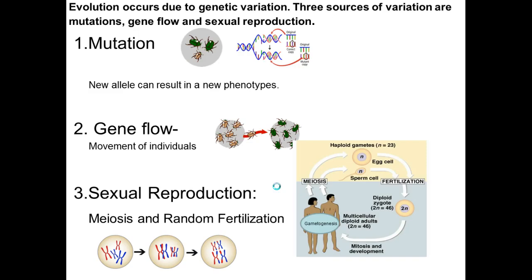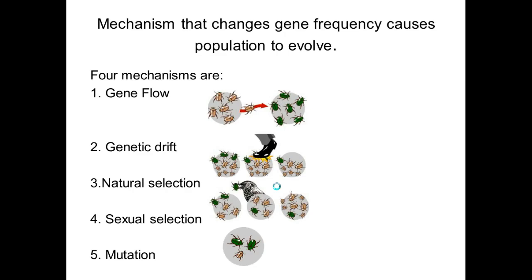As we spoke of last class, changes are caused by mutations — where a mutation in the genotype results in a new phenotype that can affect survival. Gene flow involves individuals moving in or out of a population, and sexual reproduction, meiosis, and random fertilization contribute to variation. Mechanisms for gene frequency to evolve include gene flow, genetic drift — a random event that reduces variation — natural selection, sexual selection with different courting rituals or mating times, and mutations.